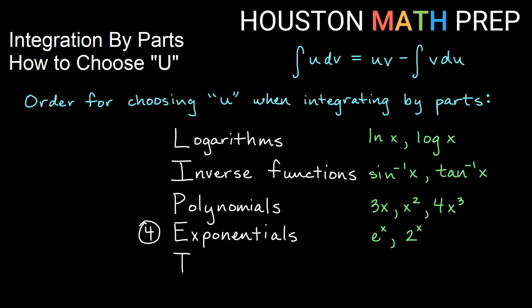The fourth one, E, stands for exponentials, e to the x, 2 to the x, those types of things where the variable is in the exponent. And then the last thing would be trig, sine functions, cosine functions, tangent functions, etc.